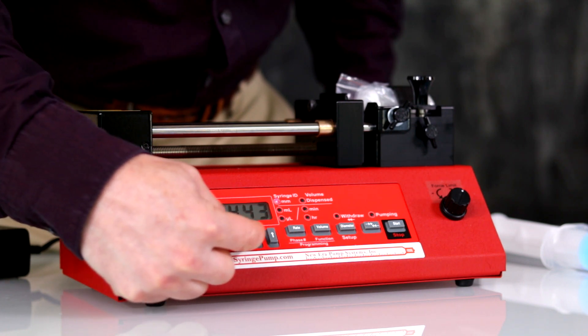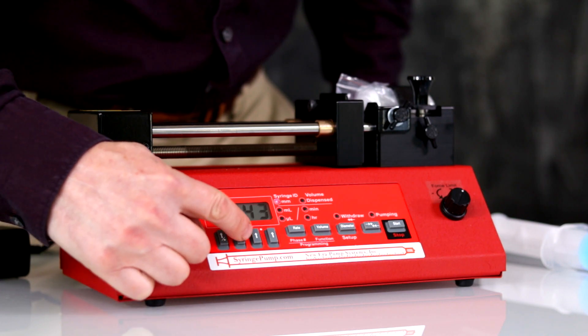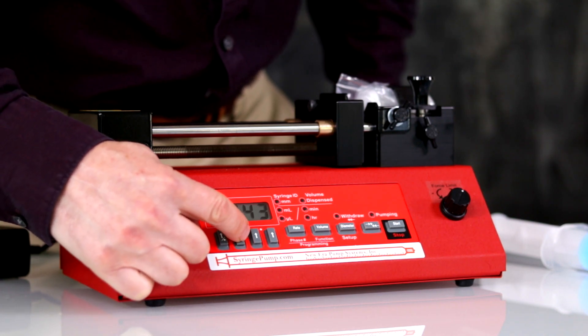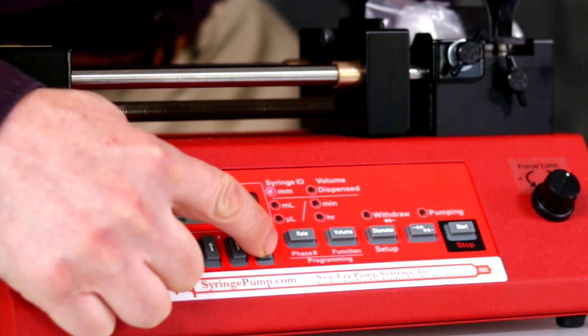The syringe loaded has a diameter of 29.2 millimeters. You can find this information in the user manual. Press and hold the key to quickly increment the digits. When entered, the display will blink and the LED will stop blinking.